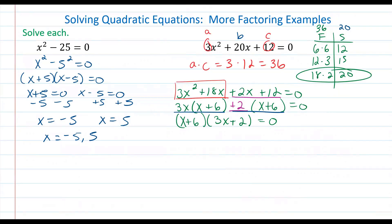Now we want to use the zero product property which allows us to set both of these factors equal to zero and solve. So x plus 6 equals zero. Subtract 6 from both sides you get x is equal to negative 6. And 3x plus 2 is equal to zero. Subtract 2 from both sides you have 3x is equal to negative 2, and then divide by 3 to get your final answer of x equals negative 2 thirds.